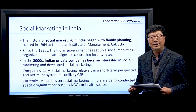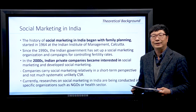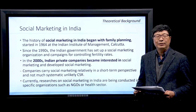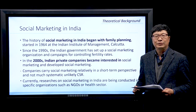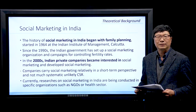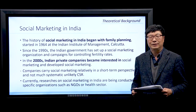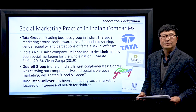The history of social marketing in India began with family planning. Social marketing started in 1964 at the Indian Institute of Management at Calcutta. Since the 1990s, the Indian government set up a social marketing organization and campaigns for controlling perpetrators. In the 2000s, Indian private companies became interested in and developed social marketing. Companies carry out social marketing in relatively short-term perspectives and not very systematically, unlike corporate social responsibility. Currently, research on social marketing in India is being conducted in specific organizations such as NGOs or health sectors.